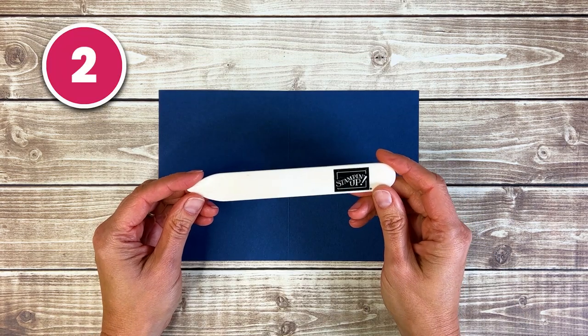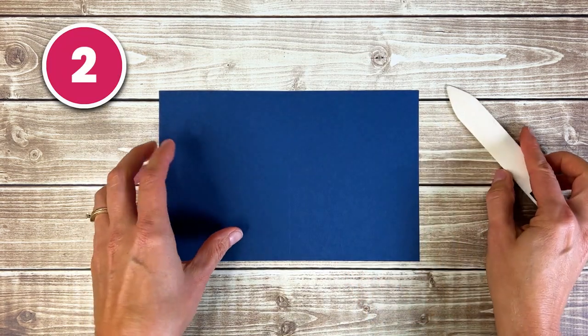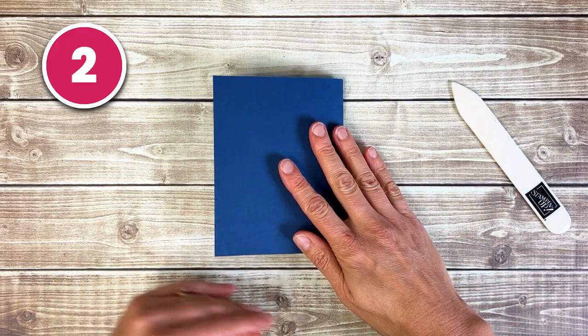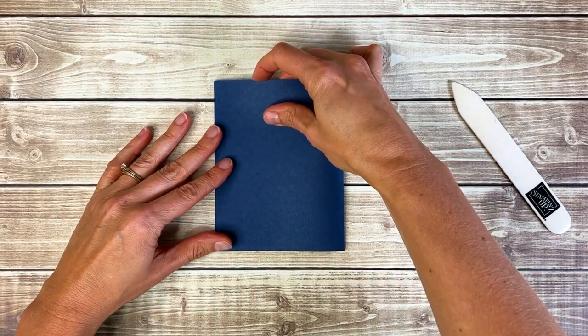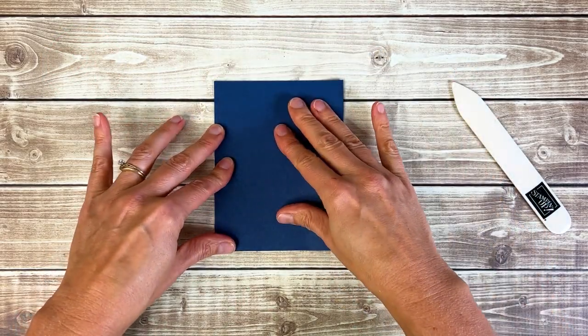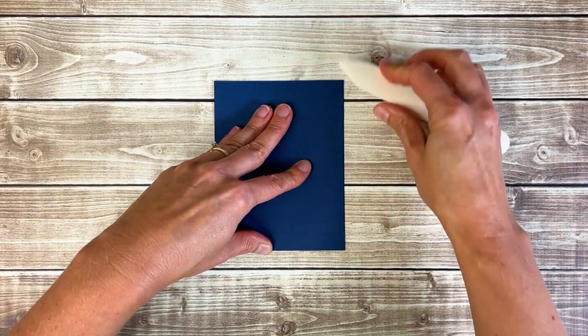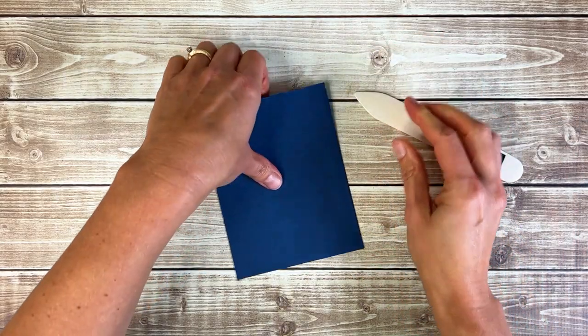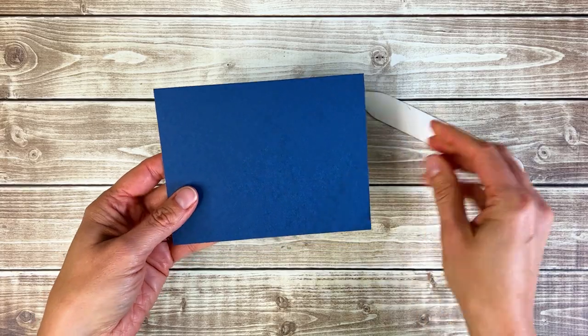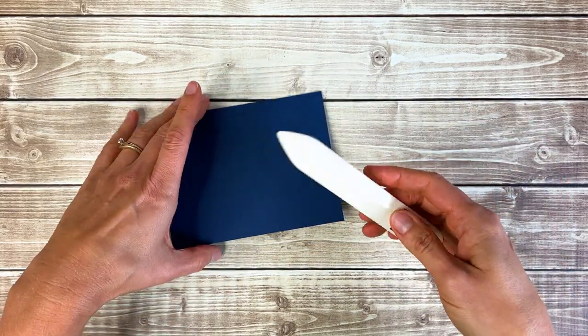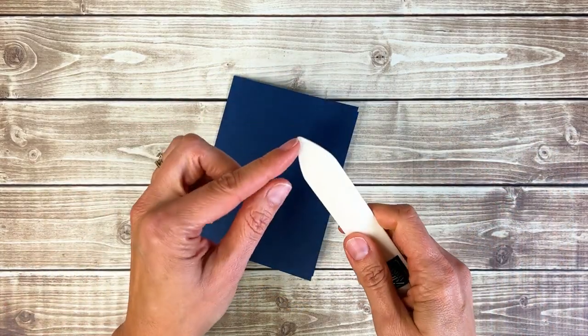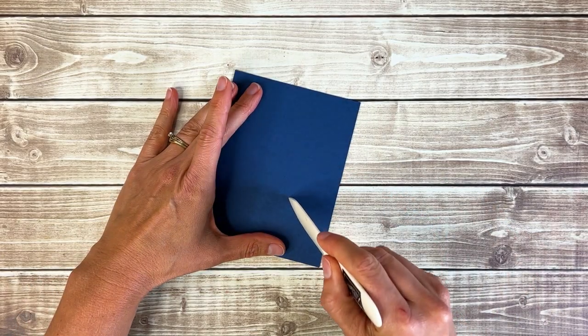Tool number two is the bone folder. This can be used to add a nice crease to your card bases. So I can fold this on the score line and then give it a nice good crease with a bone folder for a nice card base. This can be used for a number of other techniques. You can use this tip for making other score lines.